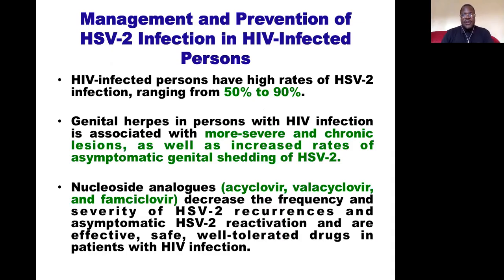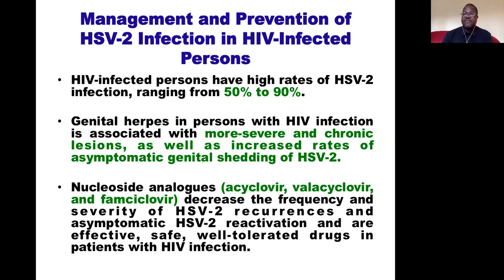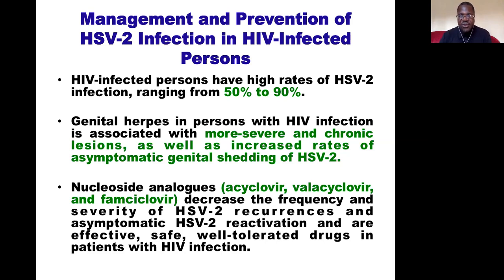How do we manage and prevent the occurrence of HSV-2 in an HIV-infected patient? First, HIV-infected people have very high rates of HSV-2 infection — between 50 to 90 percent of HIV-infected patients can develop HSV-2 infection. So the prevalence of HSV-2 is very high among HIV-infected patients.